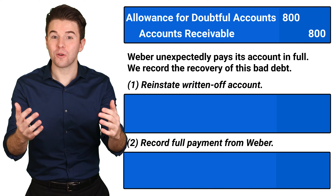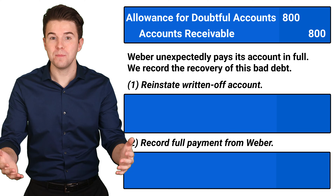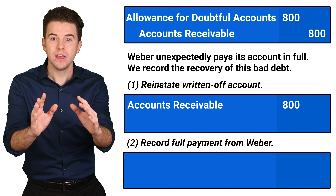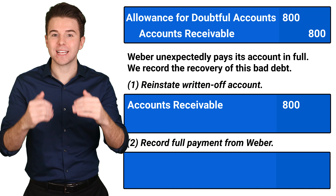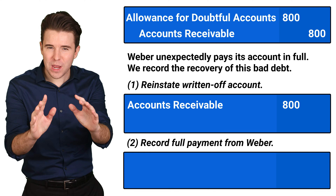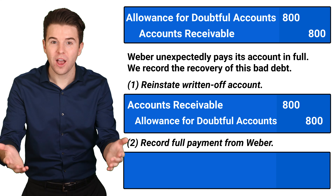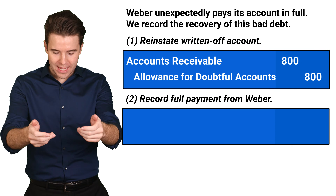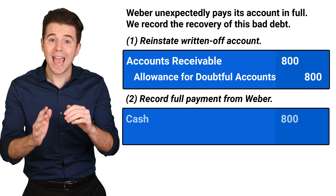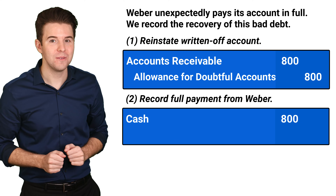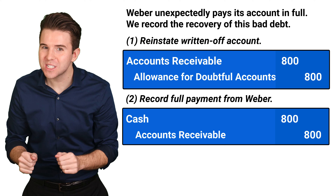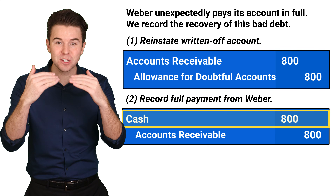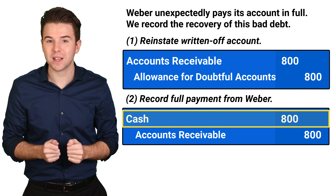So first, to reverse the effects of the entry we just made, we debit accounts receivable for 800 to reinstate and increase accounts receivable, and we credit allowance for doubtful accounts for 800. Now, for the second entry, to record cash received, we debit cash for 800 and credit accounts receivable for 800. The debit to cash increases it for the payment received from the customer, and we credit accounts receivable because the customer paid off the account.